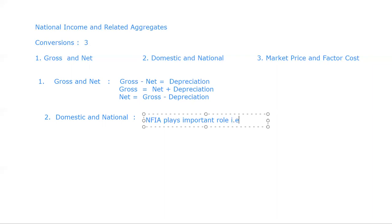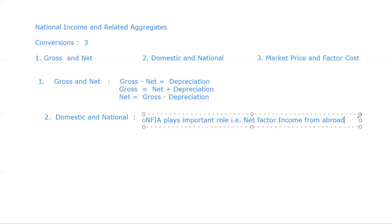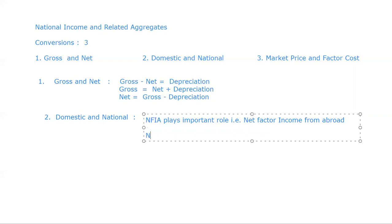What is NFIA? NFIA is Net Factor Income From Abroad. We have already discussed what depreciation means and what NFIA is. Now the question arises: how to calculate NFIA? NFIA is equal to Factor Income From Abroad minus Factor Income To Abroad.